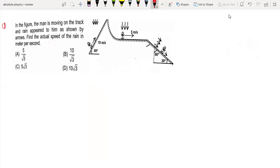Hello, in this lecture we are going to solve this question. This is a question from rain man problems. In the figure, the man is moving on a track and rain appears to him as shown. We need to find the actual speed of the rain.